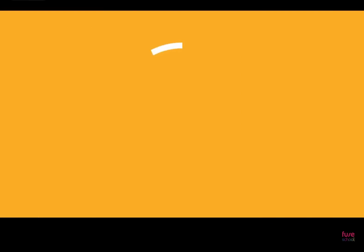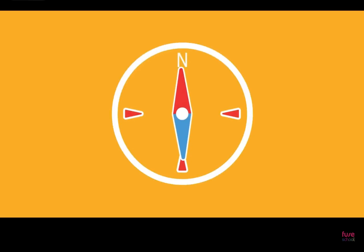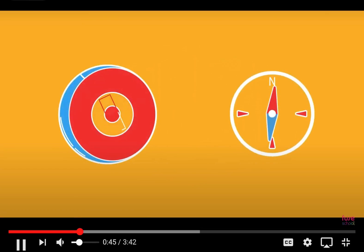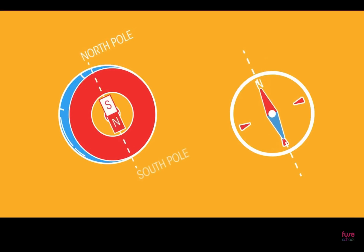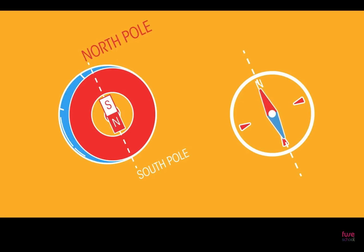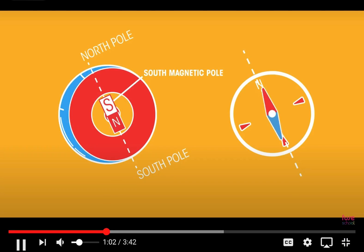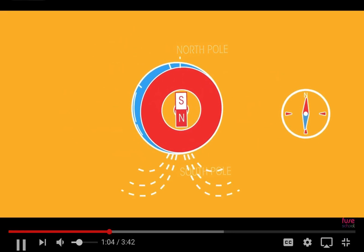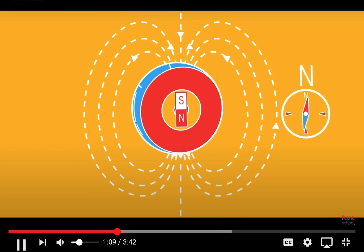Compasses show directions, but how do they actually work? Compasses have a freely spinning needle, which is a magnet. As the Earth is a giant magnet, the compass and the Earth act as any two magnets do. The north pole of the compass is attracted to the south magnetic pole of the Earth. Now, this is a rather confusing part: the north pole, geographically as we think about it, is actually a south magnetic pole. But all you really need to know is that the Earth is a giant magnet, which is why we can use compasses to show us which way north is.